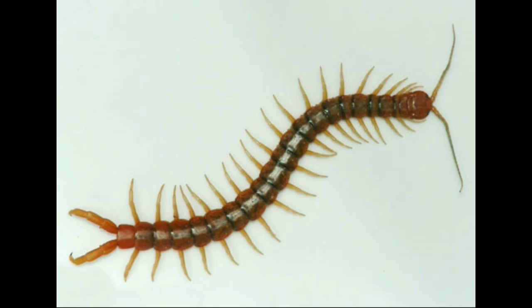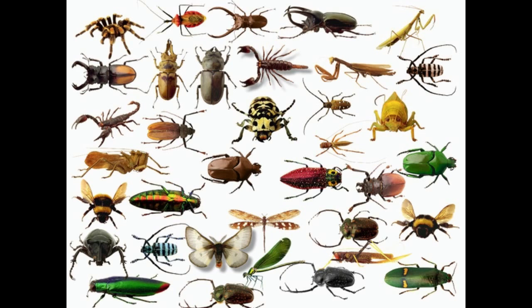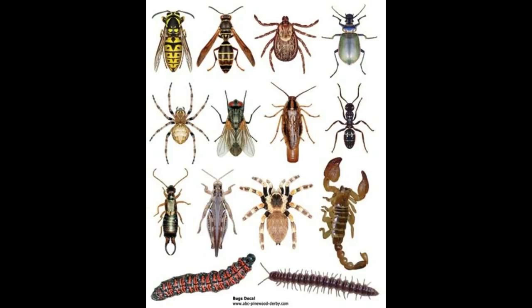Believe it or not, not every bug you see is an insect — they are arthropods. Arthropods are split into four different groups: myriapods, arachnids, crustaceans, and the insects. The actual definition of an arthropod is an invertebrate animal.